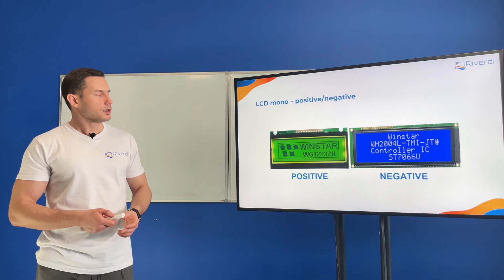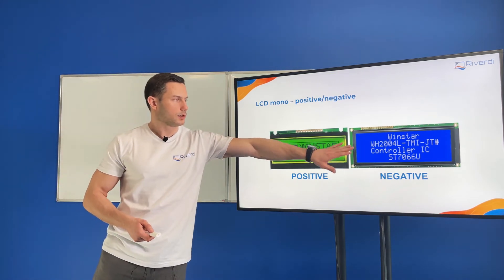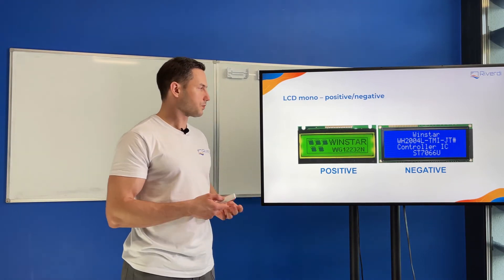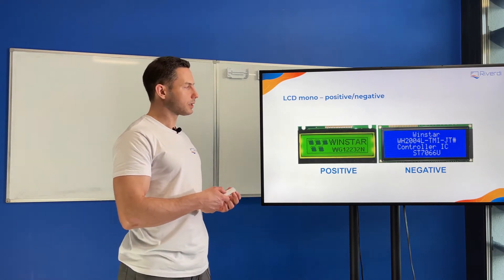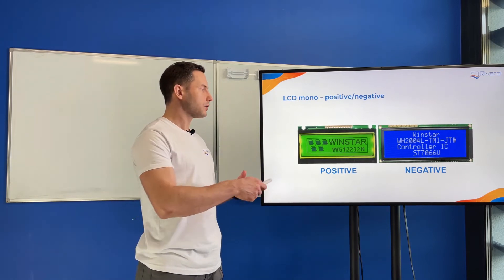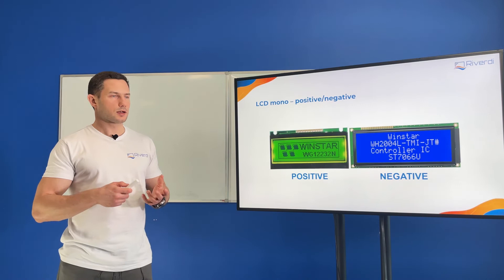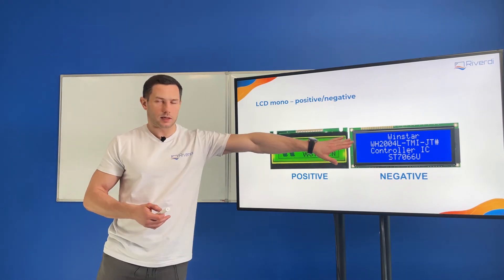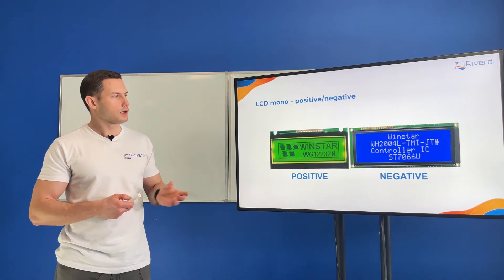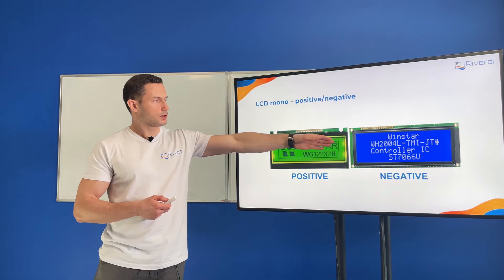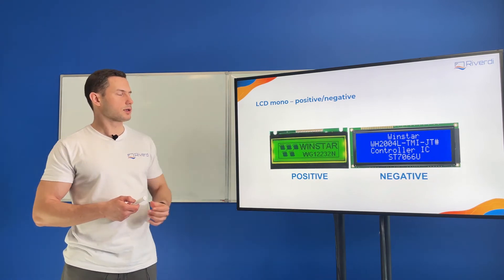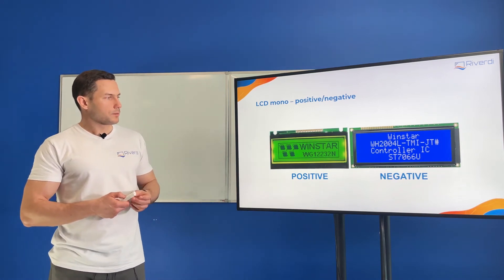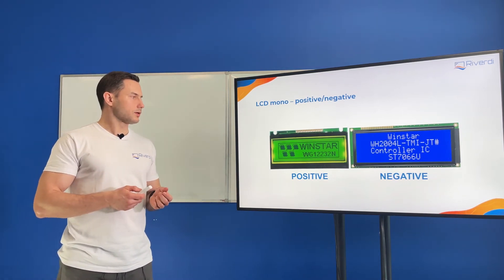In a negative display, it's completely opposite — the light is being blocked in the background. Here we have blue, because it's a property of STN displays that when you put white light under it and make negative colors, the natural color of the LCD becomes blue. But where the pixels are not blocking the light, we see white pixels. So the backlight here is a white backlight, and it's not blocked where we have the pixels.